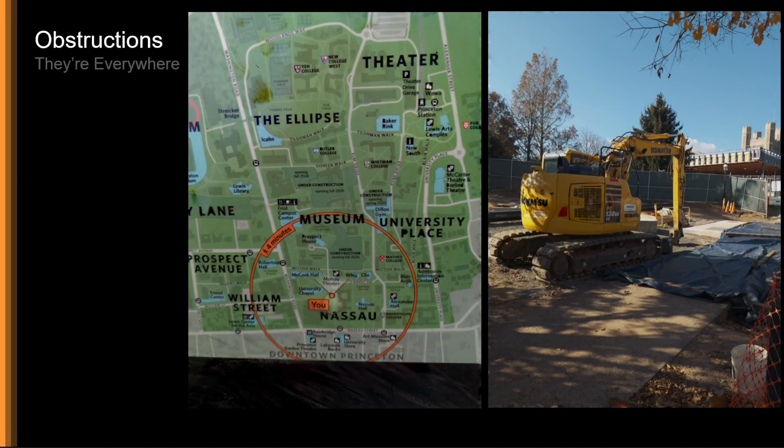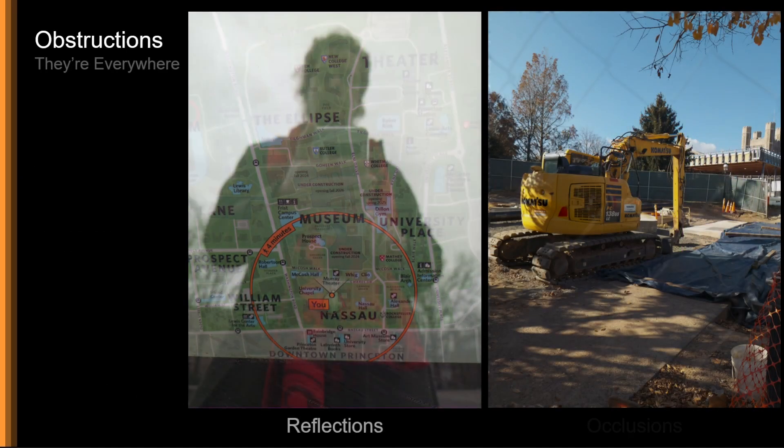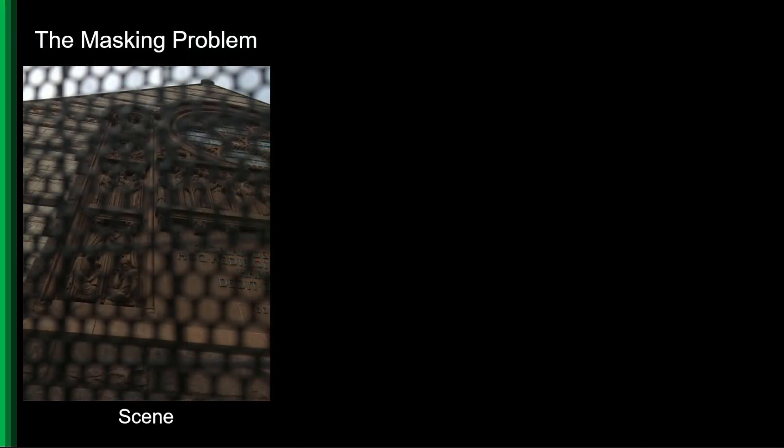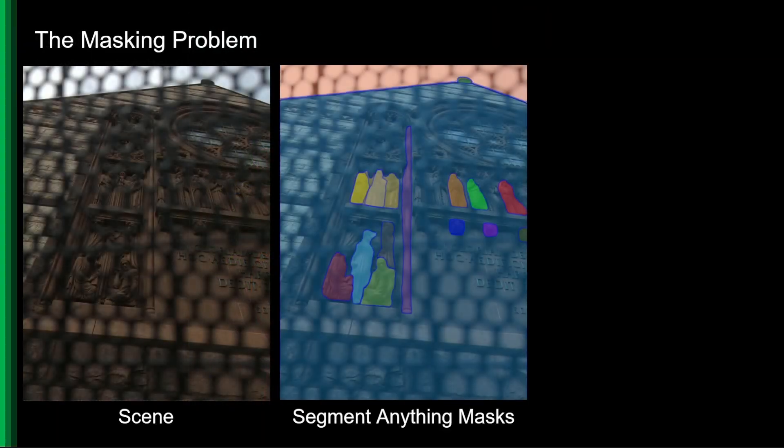The world is filled with scenes that we do want to photograph, hidden behind unavoidable obstructions that we don't want to photograph. Yet with off-the-shelf methods, it proves extremely challenging to even identify, let alone segment, these arbitrary and often out-of-focus obstructions.